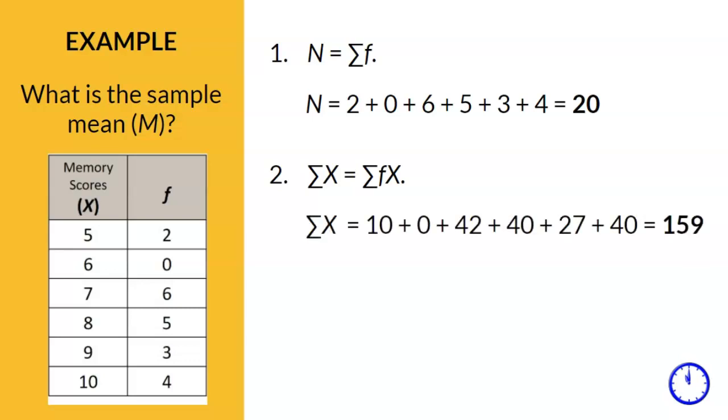In this case, we need to multiply each F with X and then add up these values. In other words, 5 times 2 equals 10, 6 times 0 equals 0, and so forth until you get 159.